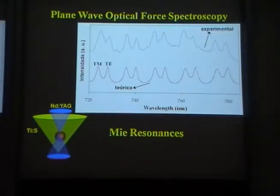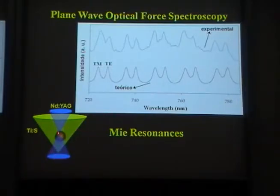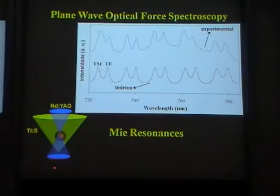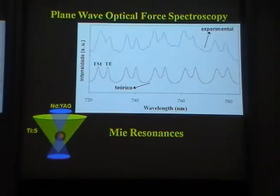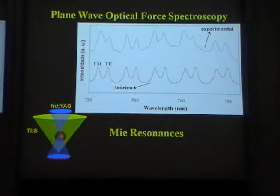Then we made what we call plane wave spectroscopy. What we did is put the Ti:sapphire laser all the way down, much below the Nd:YAG beam, so the particle is going to see something that acts like a plane wave. Each time this plane wave comes, the scattering force will push the particle down, so the movement of the particle is going to be in the Z direction. Then we change the wavelength of the Ti:sapphire laser and get the experimental results here, and these are the calculations with the new equations for scattering — the positions are the same.